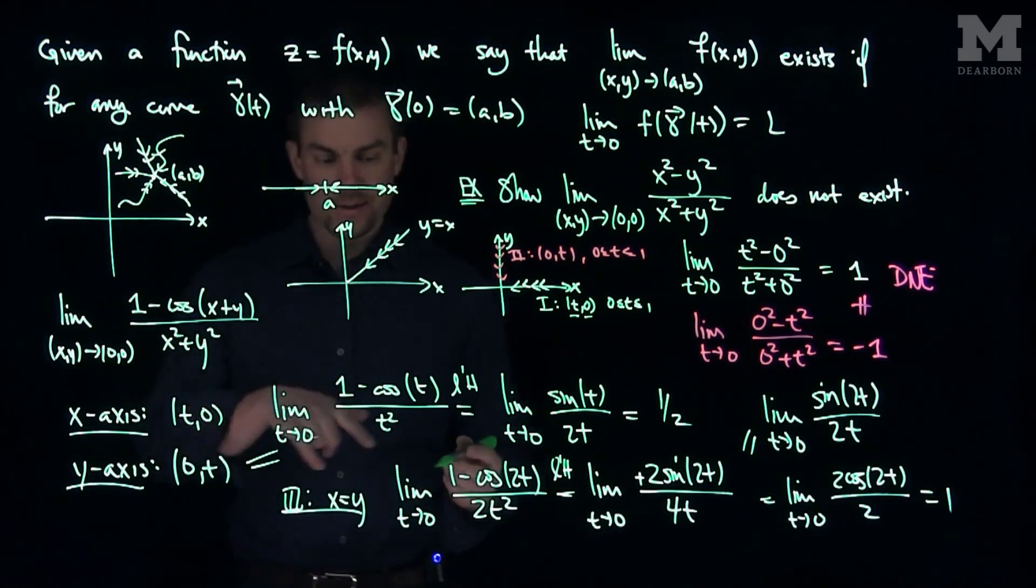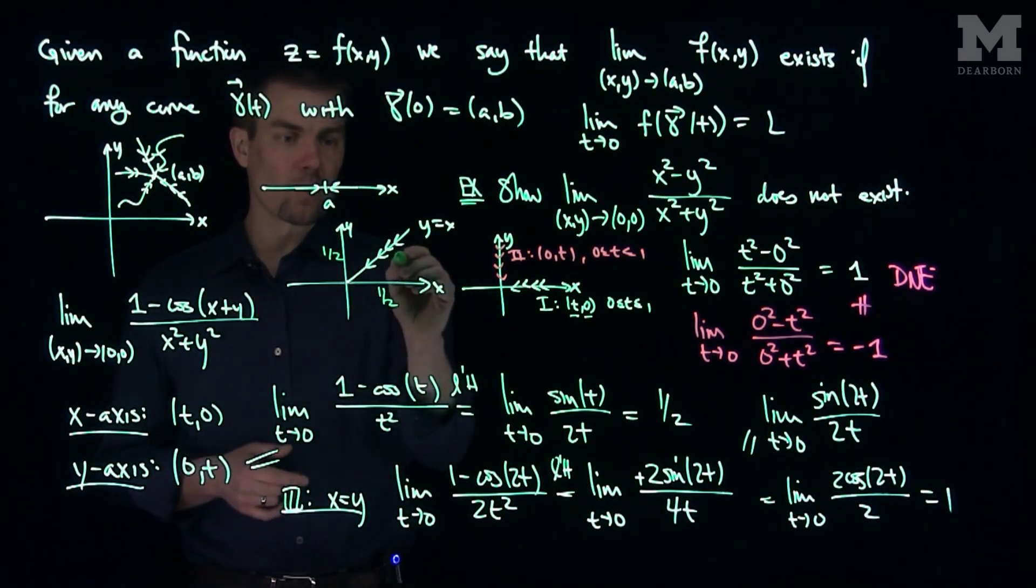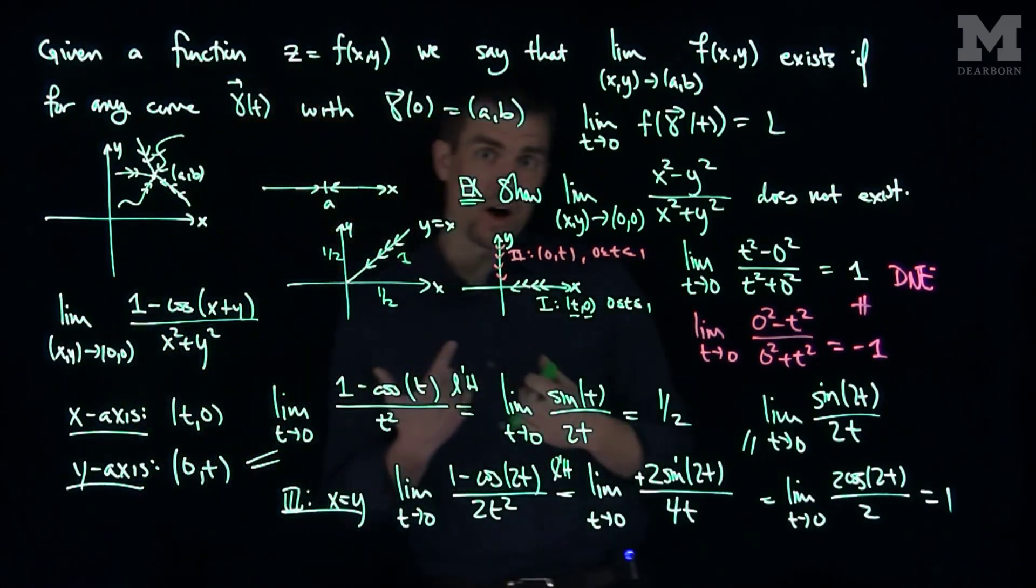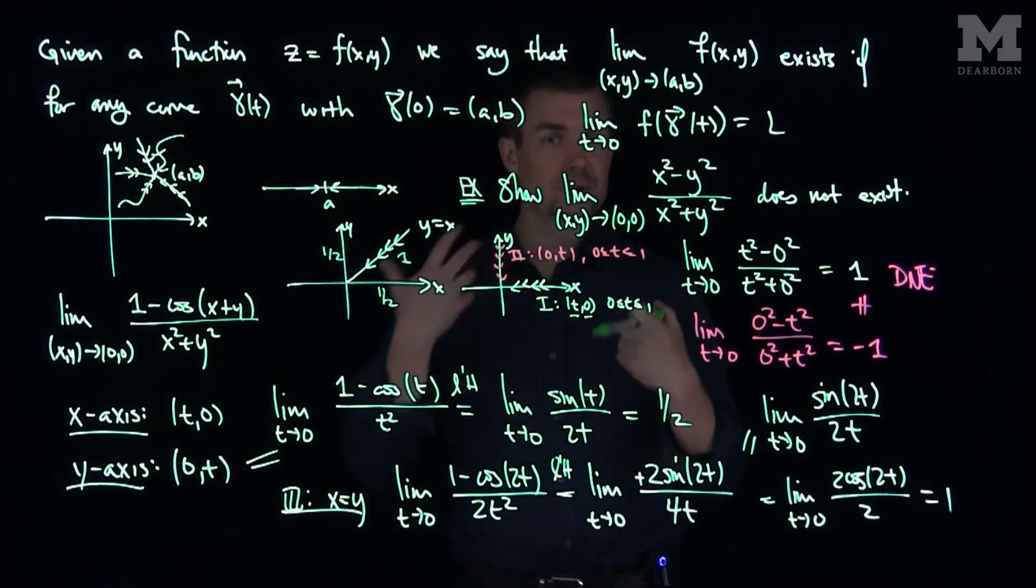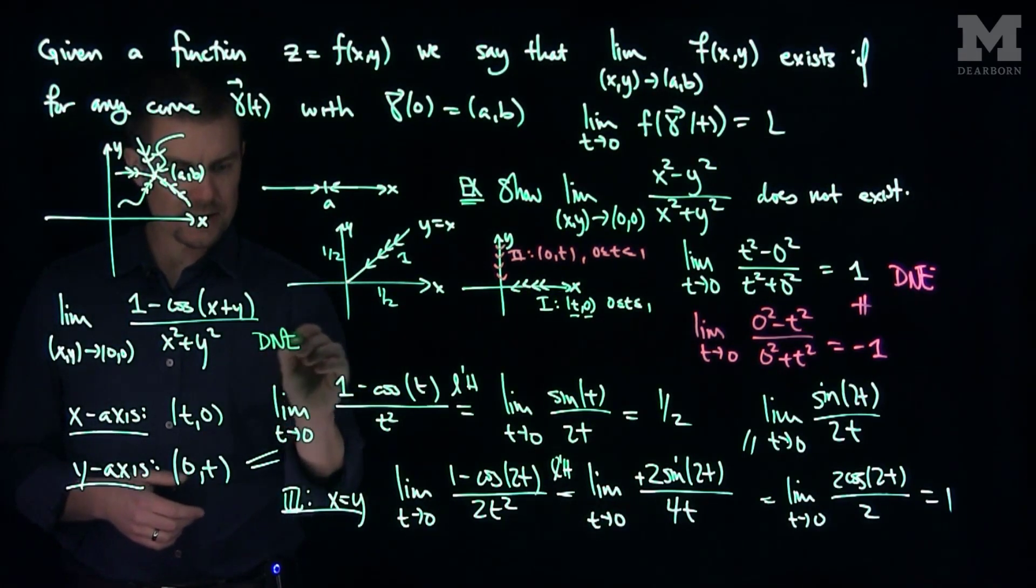So along the x-axis and the y-axis the limit is equal to 1 half and 1 half, but along the line y equals x, the limit is equal to 1. So I have distinct limits, so this limit does not exist as well. So this limit over here does not exist.